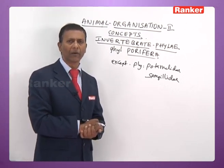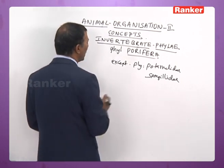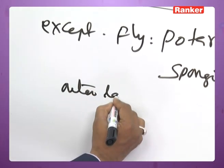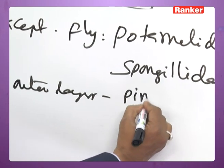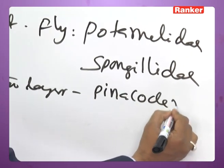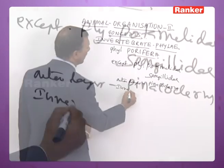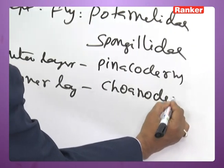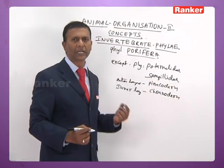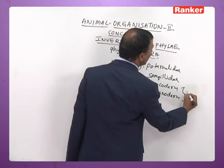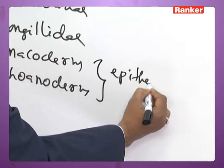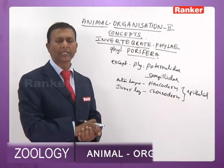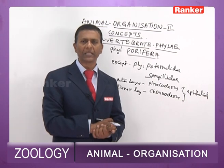Porifera are either solitary or colonial forms. They are covered by two layers: the outer layer is called pinacoderm and the inner layer is called choanoderm. Instead of calling them true diploblastic, these two layers are referred to as epitheloids, because the cells in these two layers are devoid of basal lamina.